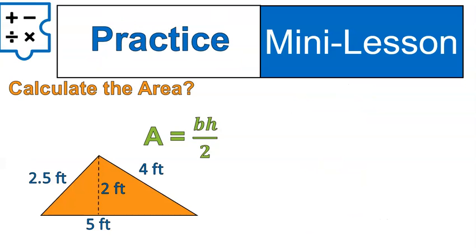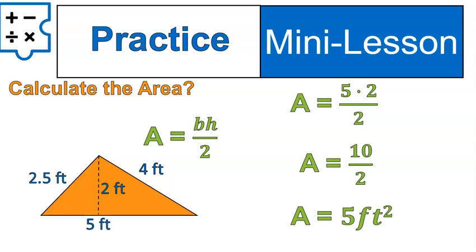Now it's time for you to practice. This one here has a lot of distracting information you might not need. Use the formula to calculate the area of this triangle. Pause and practice. We are back. When you substituted base and height, did you substitute the numbers five and two? The base is five and the height is that dotted line of two feet. We'll multiply five times two to get ten and divide ten divided by two to get our final area of five square feet.